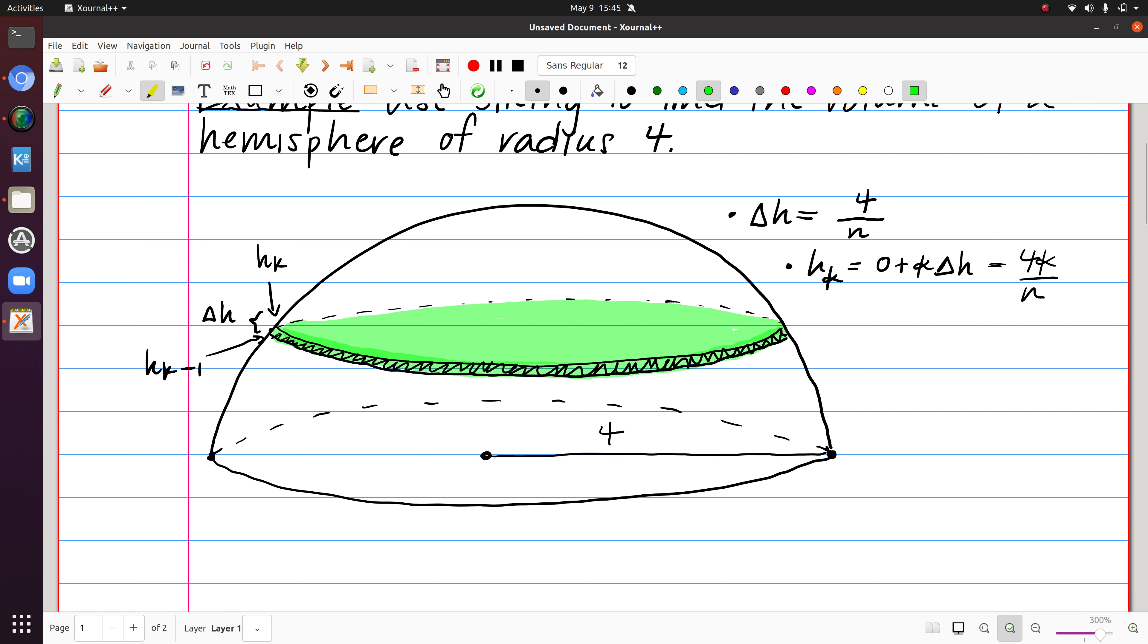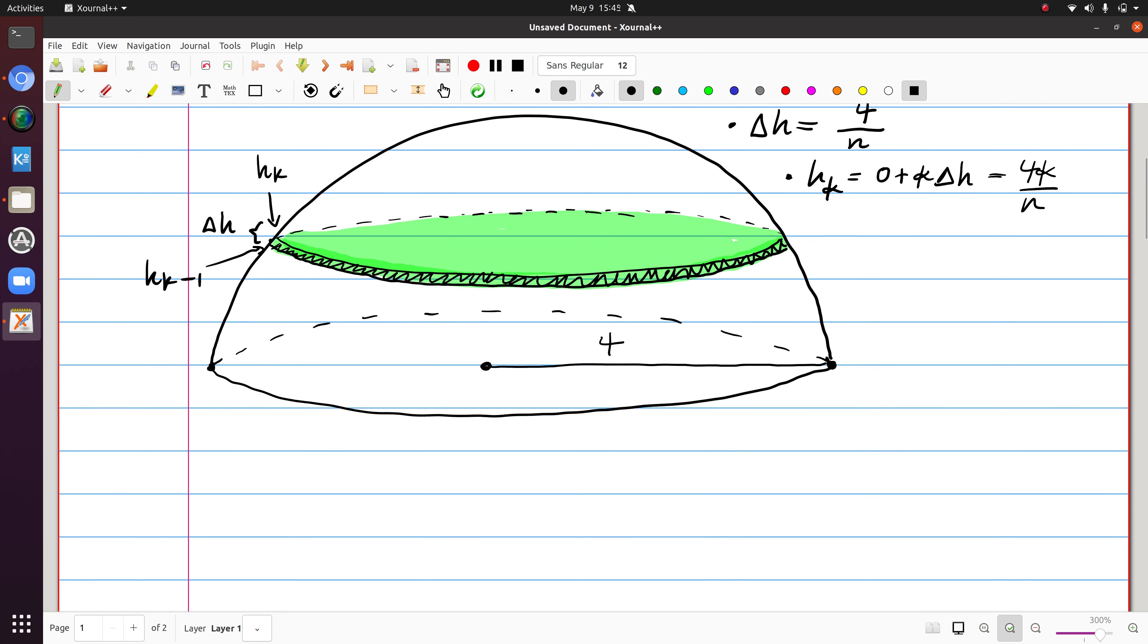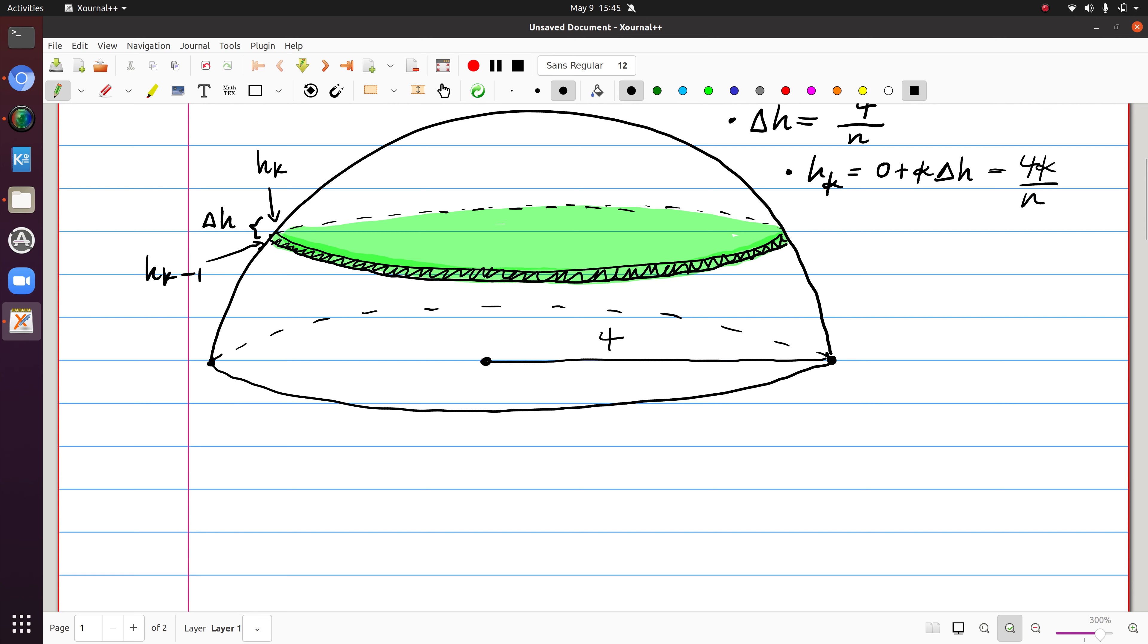When we looked at our cylinder example, we were actually able to find the volume exactly. But as is often the case with Riemann sums, we've seen that we don't need to find the volume exactly. We want to approximate it by something relatively simple. So this shape is what I'll call almost a cylinder.